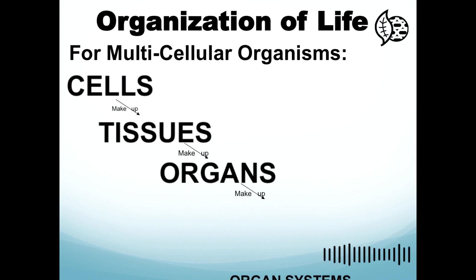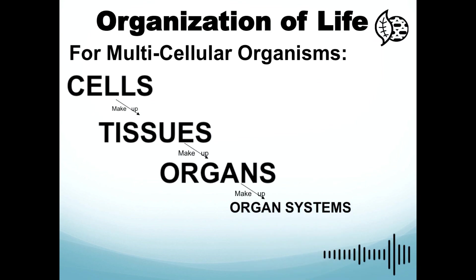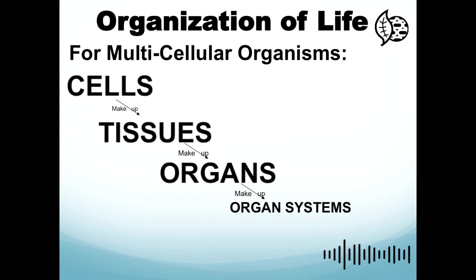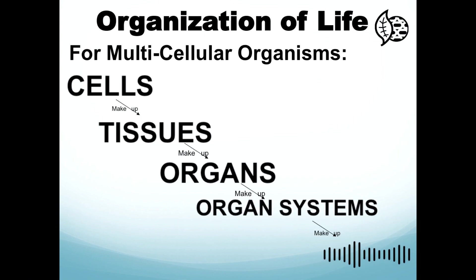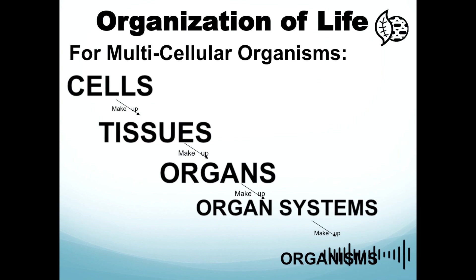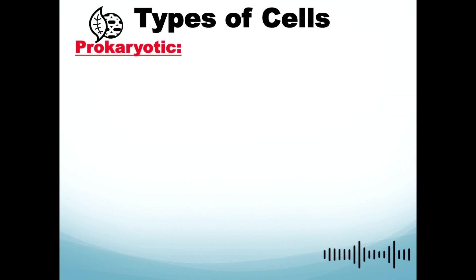The organ system is a group of organs that contribute to the performance of one or more major functions. Examples include the skeletal system, nervous system, and cardiovascular system. Finally, we have the organism — individual living things such as humans, animals, and plants.